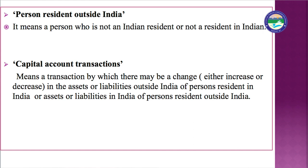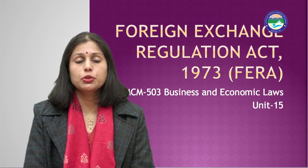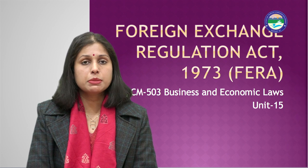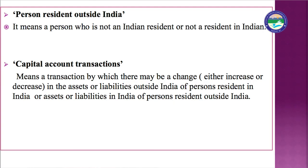Next is capital account transactions. When we study FEMA, all dealings between countries and companies are divided into two parts: capital account transactions and current account transactions. Capital account transactions are those transactions which alter the assets or liabilities — either increasing or decreasing — of a person resident in India, or the assets and liabilities in India of a person resident outside India. Essentially, these are transactions that appear on the balance sheet.